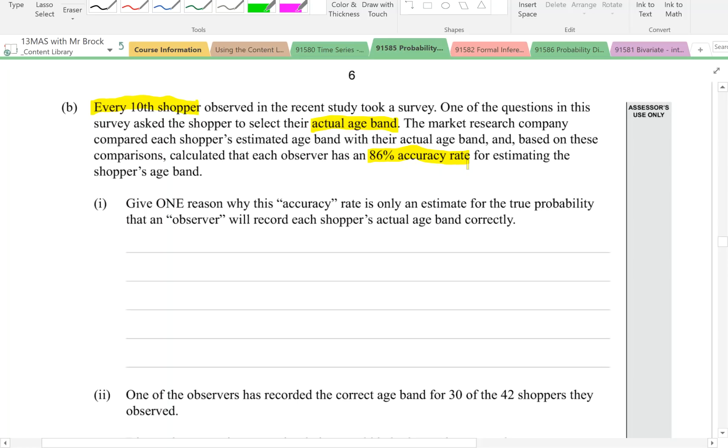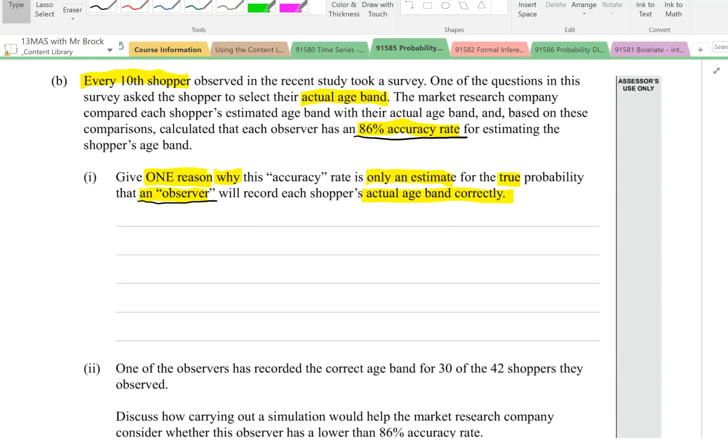The question then says, give one reason why this accuracy rate is only an estimate for the true probability that an observer will record each shopper's actual age band correctly. So what's this question assessing? It's assessing our understanding of the difference between what we call true probability of something and an experimental estimate of that probability.